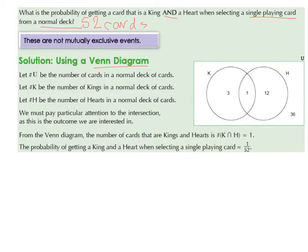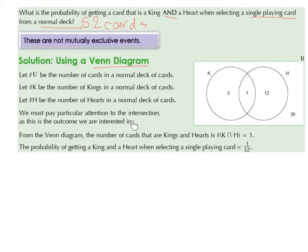There are four kings in total in a deck of 52 cards. If we take out the one king of hearts, we have three left over that are not hearts. There are 13 hearts in a normal deck; if we take out the one king of hearts, there are 12 left over that are not kings. And 52 take away 3, take away 1, take away 12, leaves us with 36 cards left over. We must pay particular attention to the intersection, as this is the outcome we are interested in. From the Venn diagram, the number of cards that are kings and hearts is the number of elements of K intersect H, which is 1.